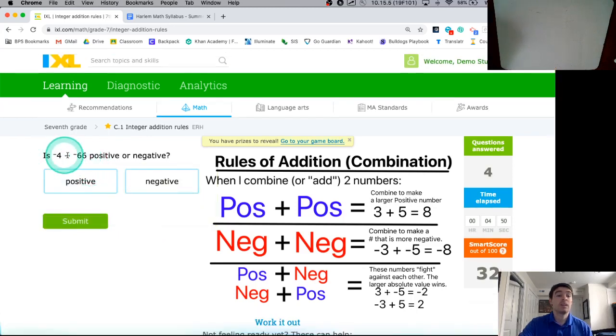The next one up is -4 + -66, positive or negative? Again, this is an example right here of our scenario where we're using a negative number added with another negative number. So they're going to combine. If 4 + 66 is 70, then this -4 + -66 going to give us a negative number, -70.